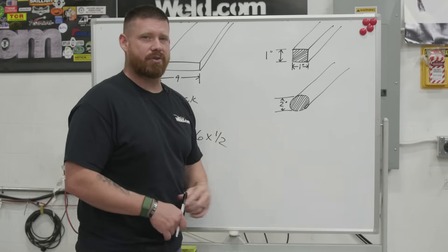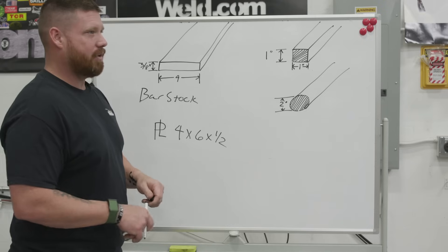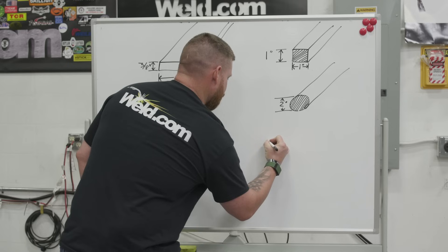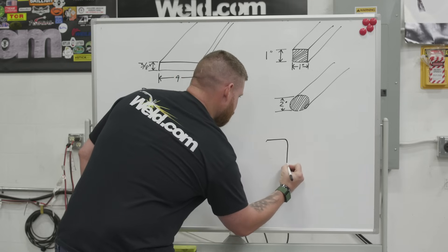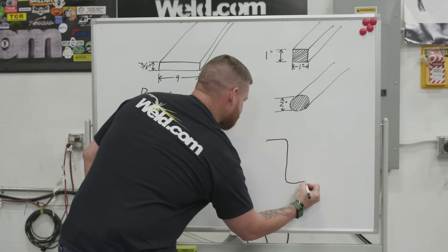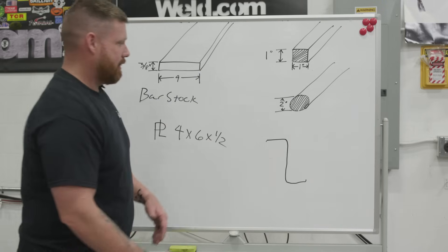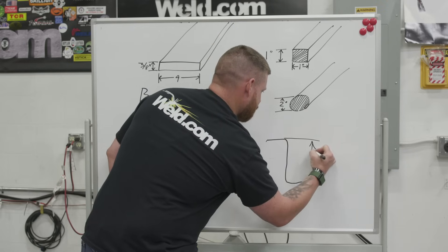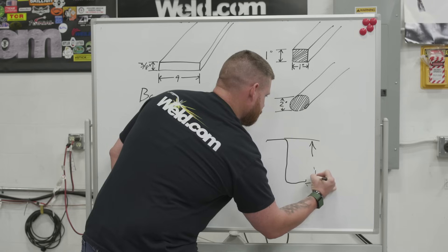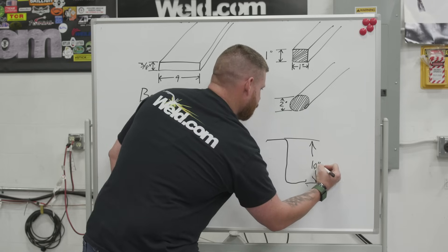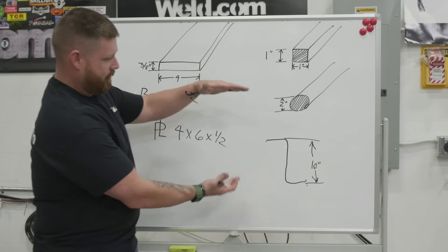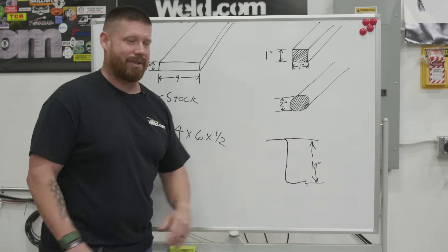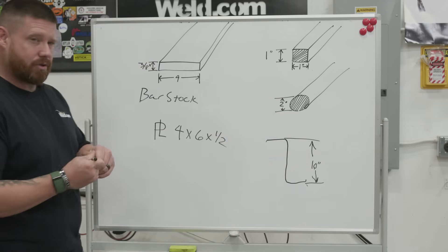So that pretty much covers all the most common structural shapes. If you get into like pre-manufactured metal buildings, there's something called a Z Perlin and that is going to be something like that. And that's going to be listed as like a P and then whatever this height is. So let's say that that's a 10 inch piece. So that'll be like a P 10. So that's going to be your height from the top to the bottom of the Z. That's not going to be nominal. That's actually going to be the actual depth. So that pretty much covers all the different structural shapes.